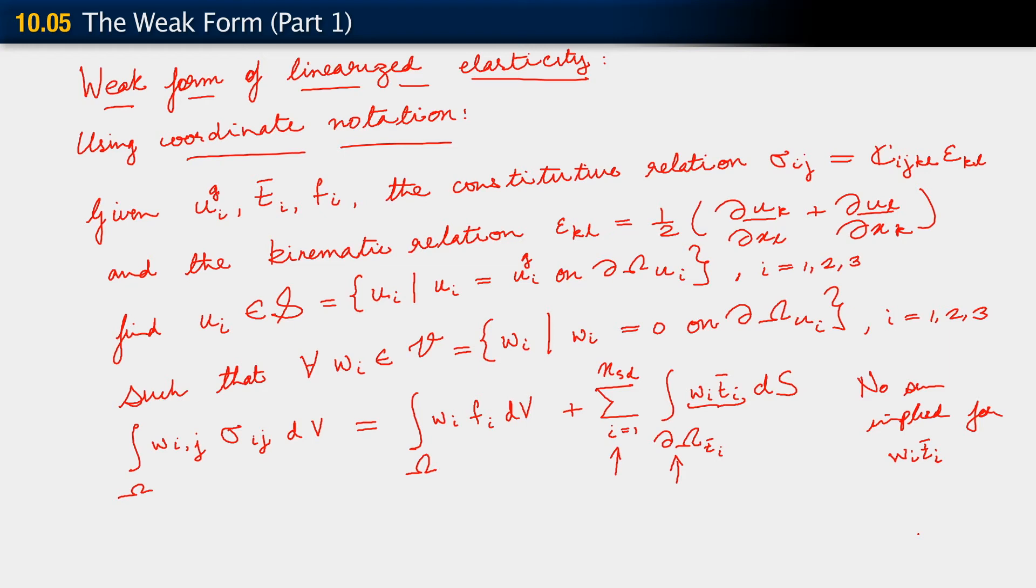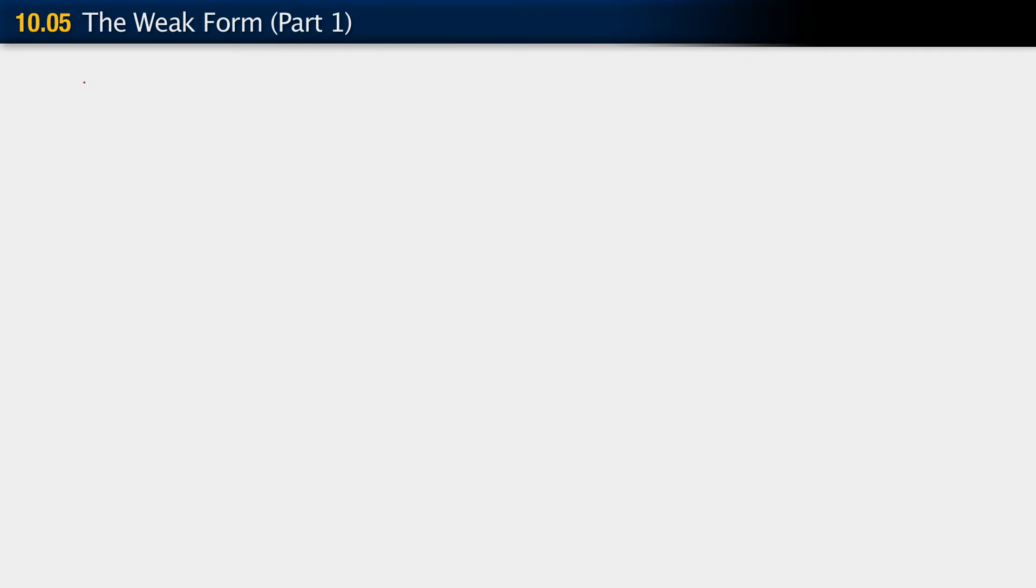We can't quite do it as an implied sum. What we need to do instead is compute that product for each value of i, w_i t_bar_i, integrate it over the corresponding Neumann boundary, which could be different for each component. We get a scalar, then sum up those scalars over the three spatial dimensions. No sum implied for just that term w_i t_bar_i. This is our weak form.